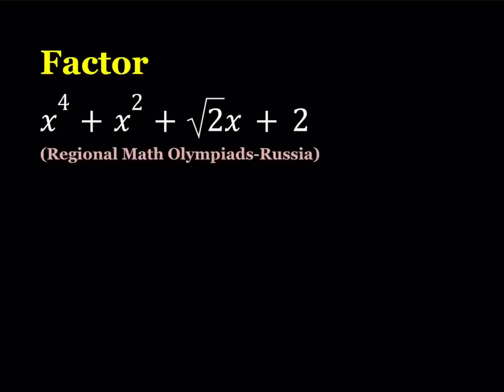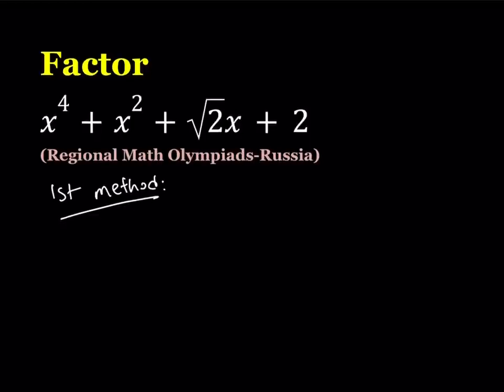I'll be presenting two methods, so let me start with the first one. The first method is going to be a little more painful in my opinion, but you get to decide. I'm going to write this expression x^4 + x^2 + √2x + 2 as a product of two quadratics.